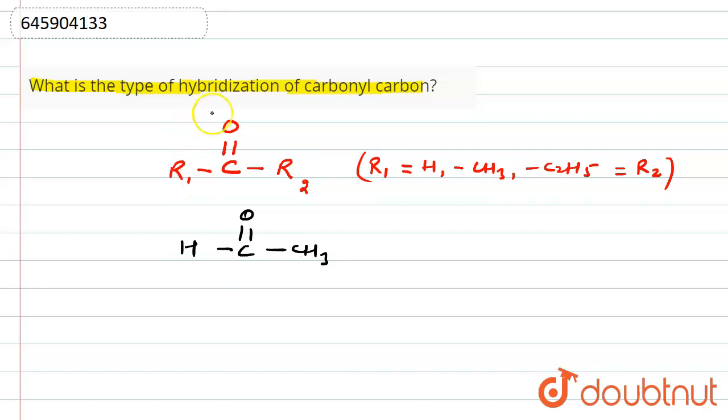Remember that for hybridization, we have to count sigma bonds plus lone pairs of electrons, which is called the steric number. If steric number equals 2, the hybridization will be sp. For steric number 3, hybridization will be sp2, and for 4, it will be sp3, because carbon can form a maximum of 4 bonds.